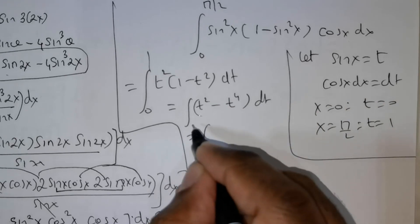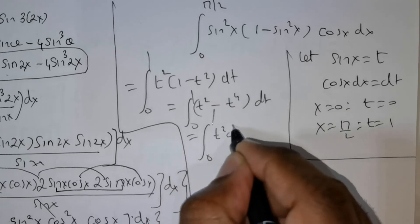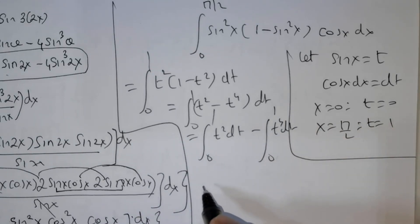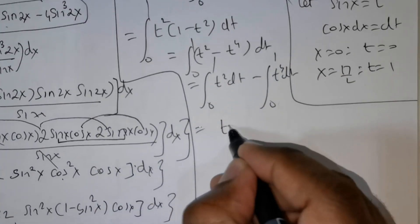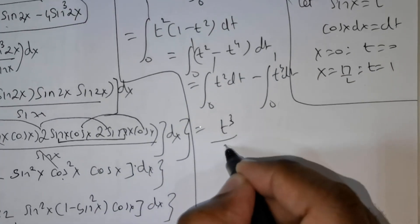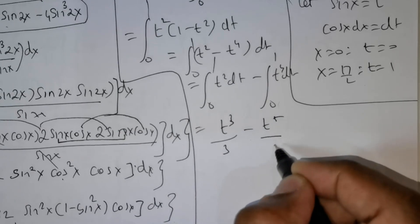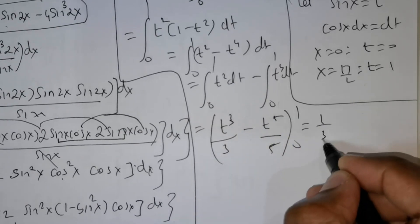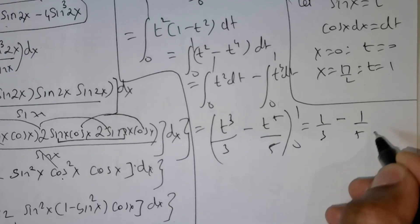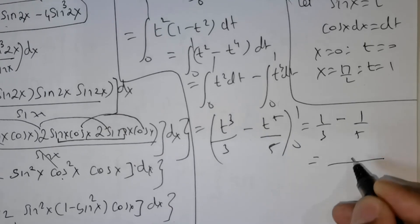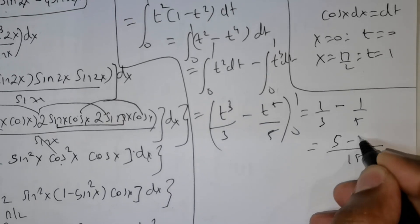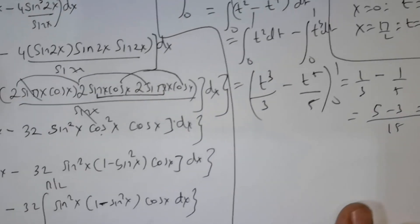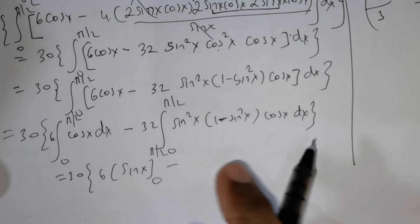This can be rewritten as integral from 0 to 1 of t squared dt minus integral from 0 to 1 of t to the power 4 dt. Integrating gives t cubed over 3 minus t to the power 5 over 5, evaluated from 0 to 1, which gives 1 over 3 minus 1 over 5. Taking LCM as 15, this is 5 minus 3 over 15, which equals 2 over 15.